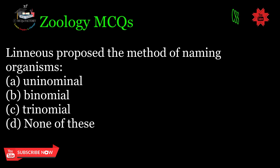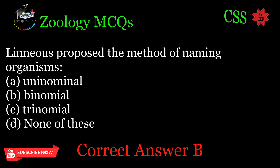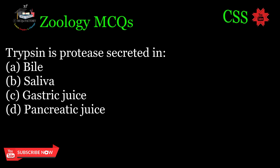Linnaeus proposed the method of naming organisms: A. Uninominal, B. Binomial, C. Trinomial, D. None of these. Correct answer: B.